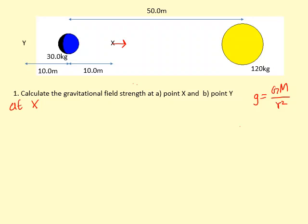The distance we need to use for the force from the yellow at point X is going to be this distance, which is 50 minus 10.